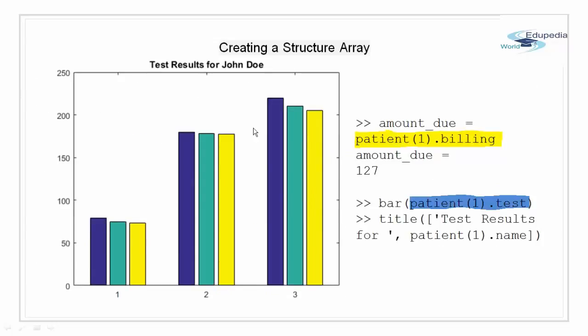We can access the data in the structure array to find how much the first patient owes and to create a bar graph of his test results. We can access the billing field using the dot field name operator as highlighted in yellow. So we will have patient(1) then a dot operator followed by the field name that is the billing. We can also display the test data of the patient in the bar graph as highlighted in blue. Again we are referring to test field using the dot notation. So we get a bar graph something similar to shown here.